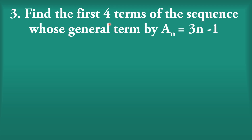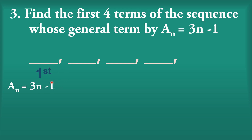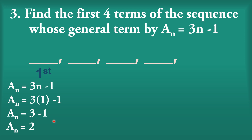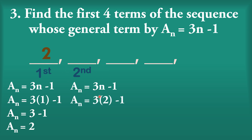How about number 3? Let us find the first 4 terms of the sequence whose general term a sub n is equal to 3n minus 1. Replace n by 1: 3 times 1 minus 1 gives 3 minus 1, which equals 2. So the first term is 2. Replace n by 2: 3 times 2 minus 1 gives 6 minus 1, which equals 5. So the second term is 5.